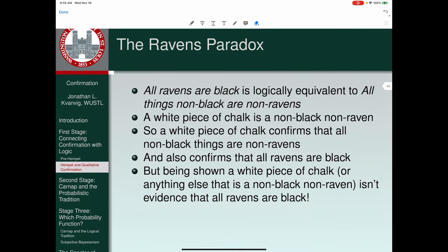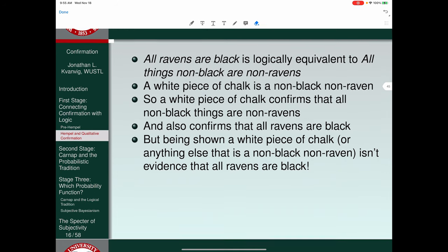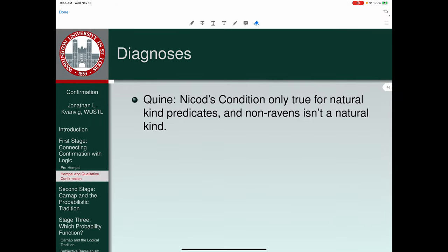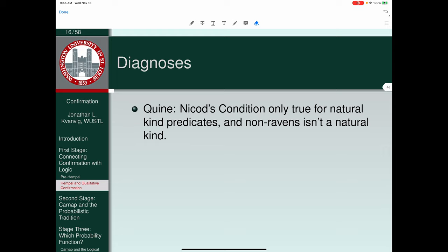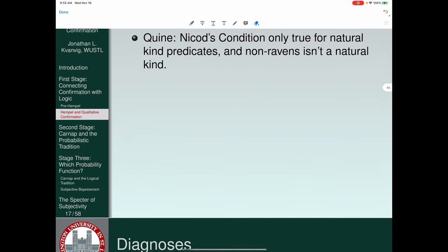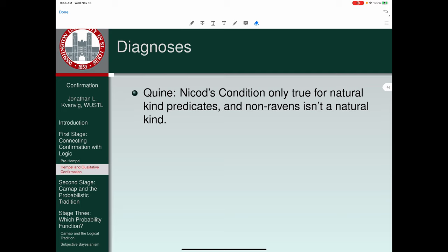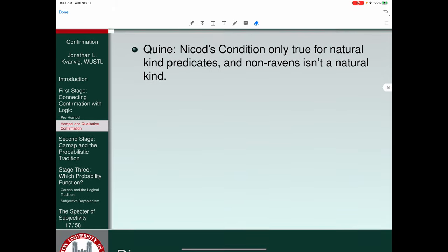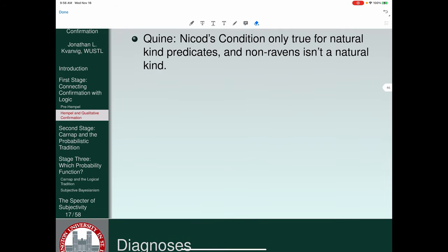Now, Hempel's own view was you have to bite the bullet and say that the white piece of chalk or the white piece of paper does confirm. But he didn't have any good story as to how that solved a problem. Other people said Nicod's condition has to be limited. It's true, only, Quine said, for natural kind predicates. Natural kinds are things like tigers, lions, human beings, oak trees, that sort of thing. And non-ravens isn't a natural kind. It's just an agglomeration of a whole bunch of things, some of which are natural kinds and some of which are not natural kinds either. So table isn't a natural kind, by the way. It's an artifact, so artifacts aren't natural kinds. So non-ravens would include tables. That's not a natural kind. It would also include being an oak tree or an armadillo, that disjunctive kind. And that disjunctive kind is also not a natural kind.